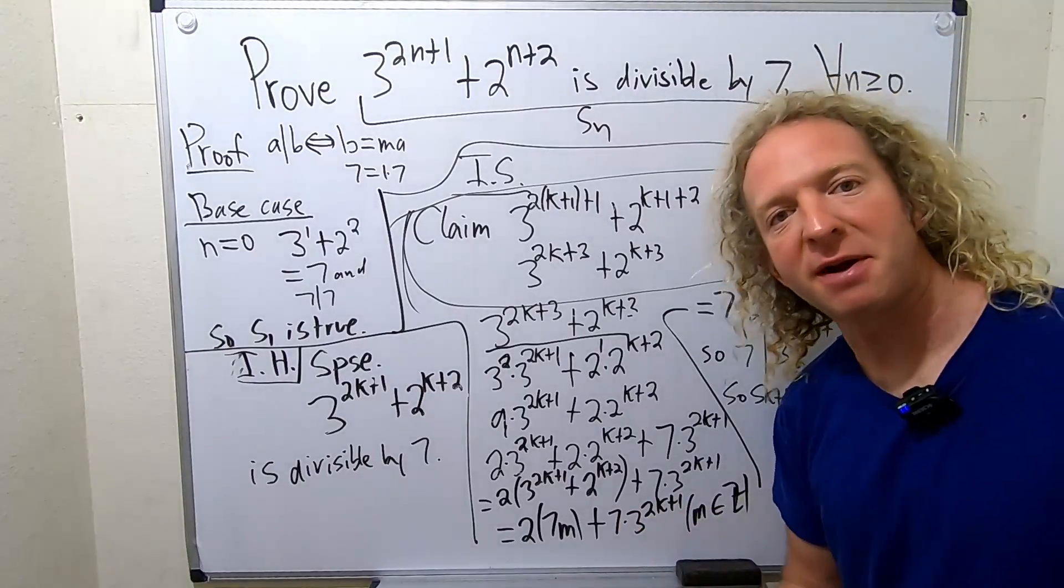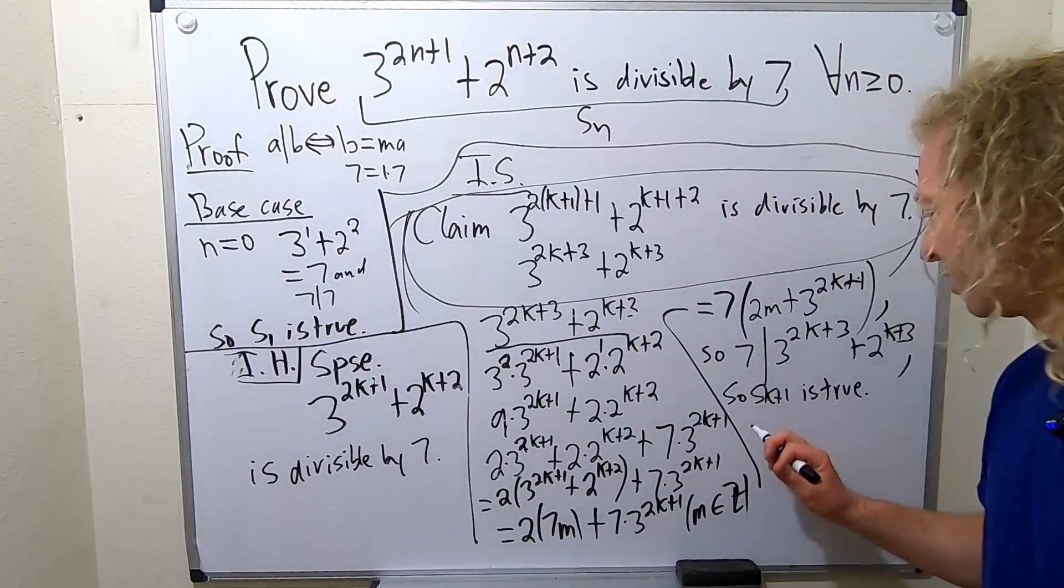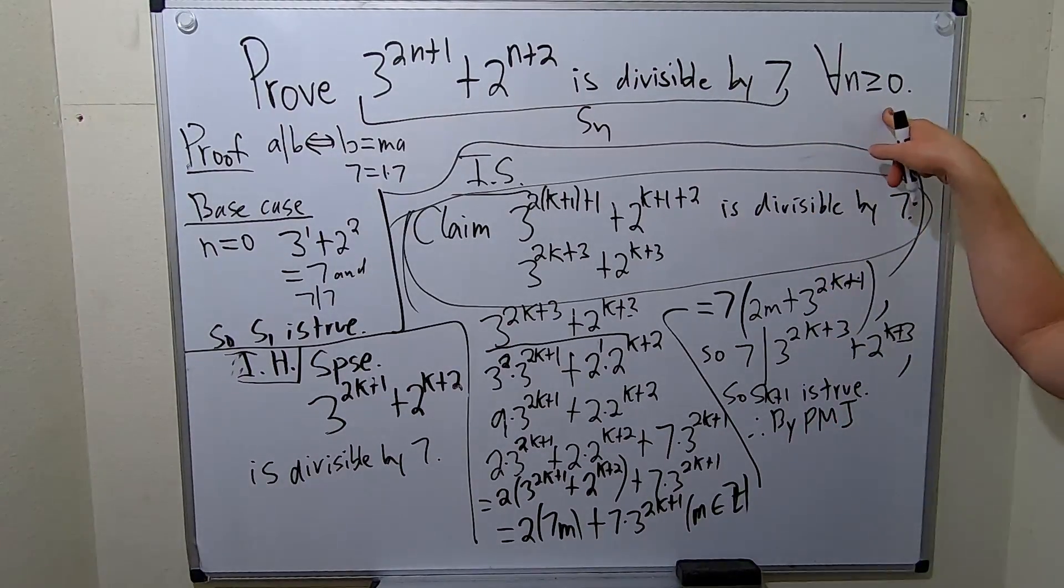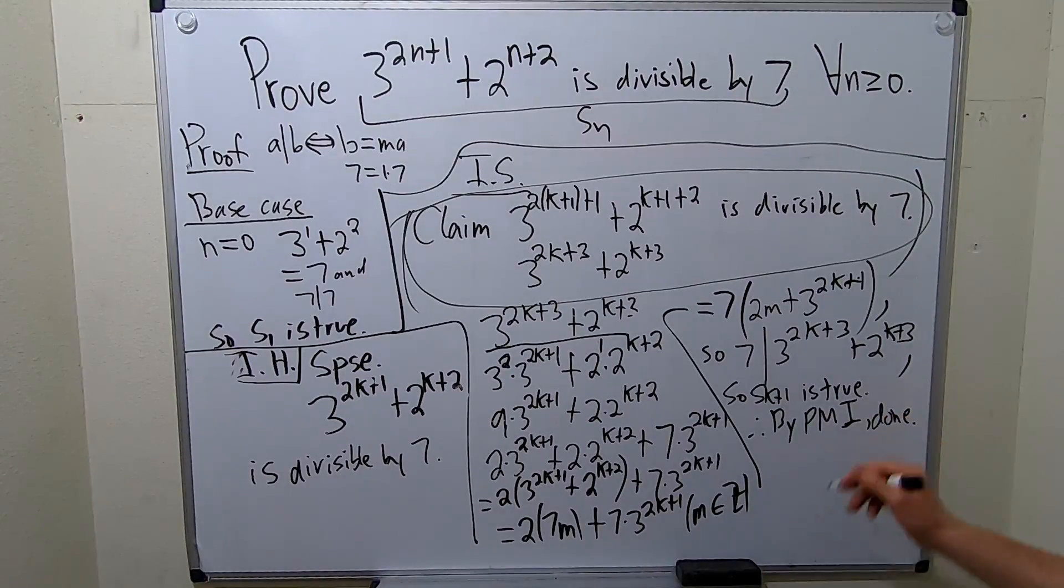And therefore, by the principle of mathematical induction, we are done. We finished the proof. So by PMI, we're done. Therefore, by PMI, the statement is true for all integers n greater than or equal to 0. You're supposed to say that, but I'll just say done. Just be a little bit lazy, running out of room.